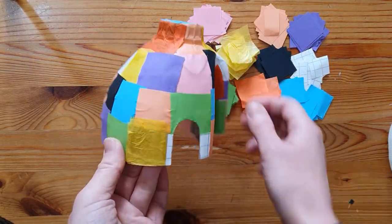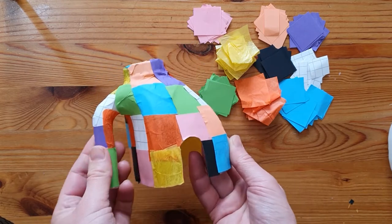Continue till you've covered your elephant. You can trim or fold around the paper that overlaps the edges.